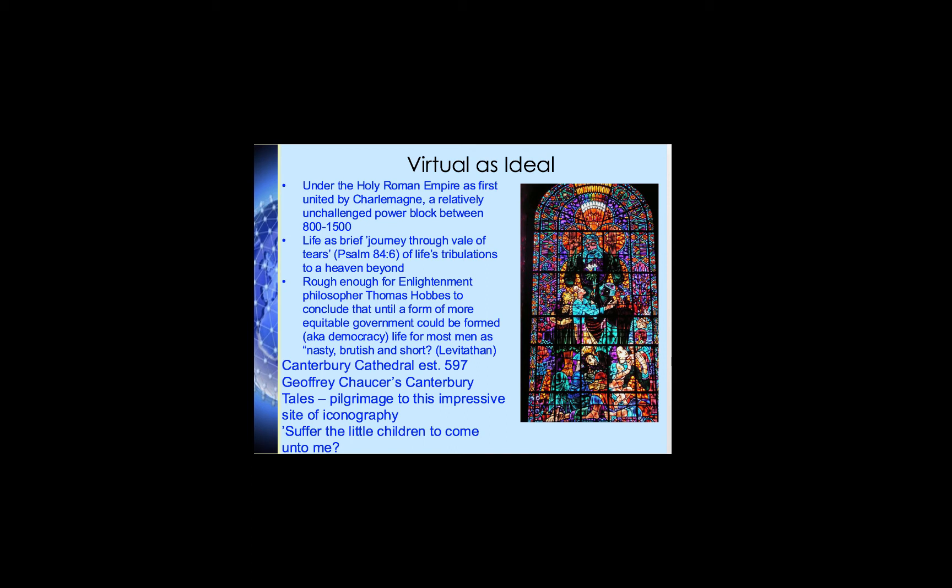Conditions for the average person were rough enough that enlightenment philosopher Thomas Hobbes concluded around the 1600s that until a more equitable form of government could be formed to distribute wealth more equally, life for most men was — and this is a famous quote from his book The Leviathan — 'nasty, brutish, and short.'